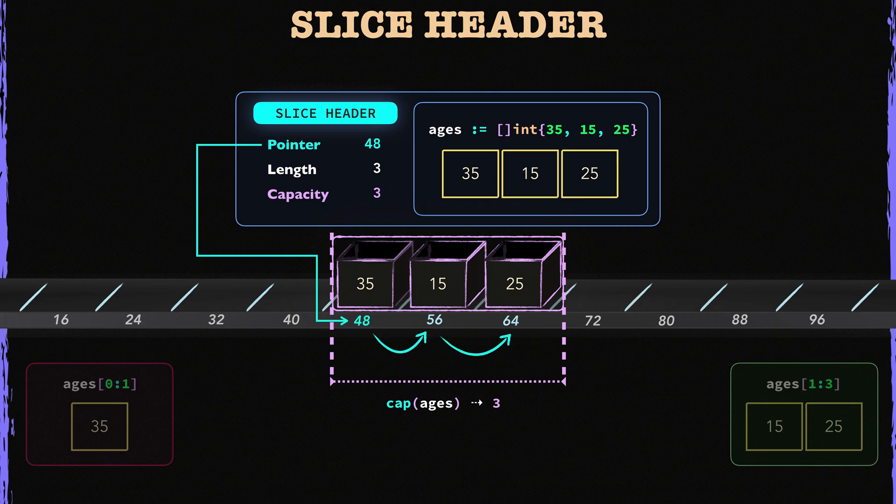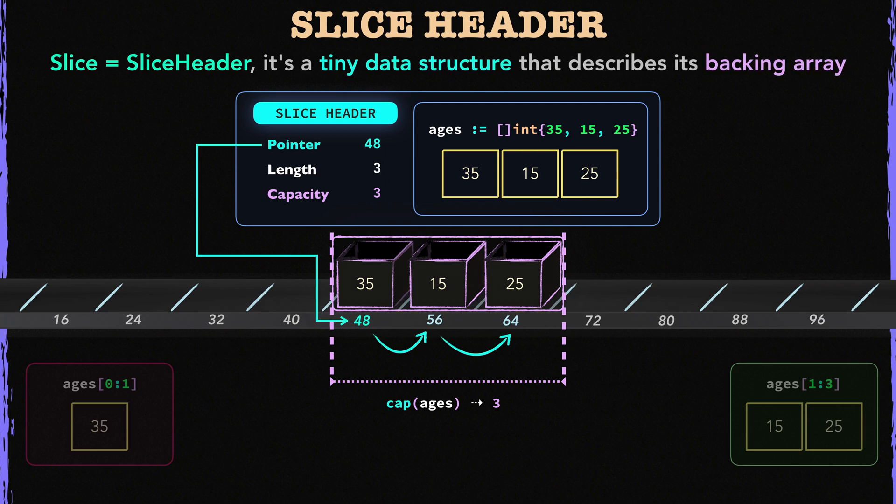So in summary, never forget this. The slice value means the slice header. So when I say slice, always think that it's a slice header. A slice is a tiny data structure with 3 numeric fields that describes its backing array. Only that. It's nothing beyond that.